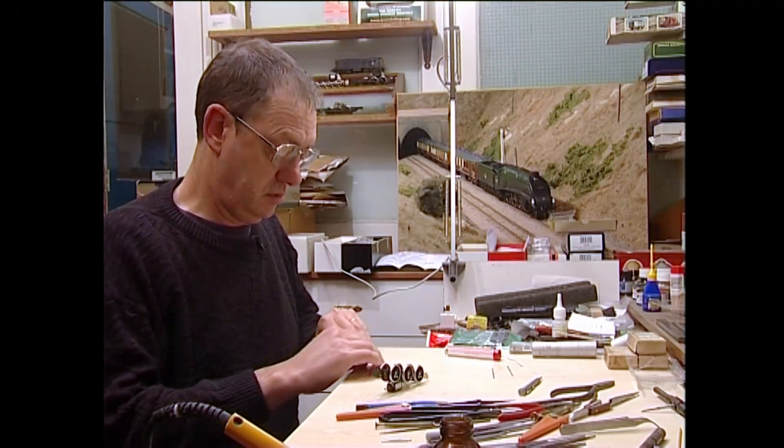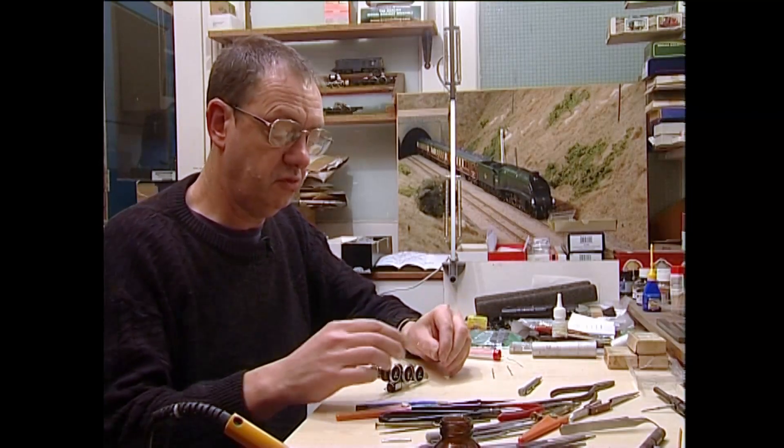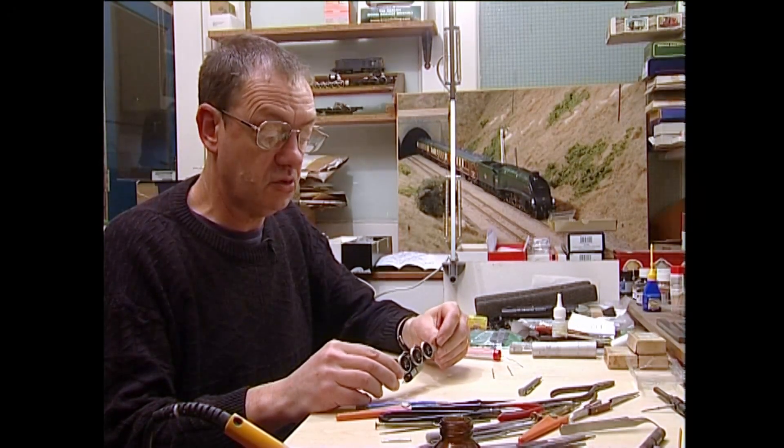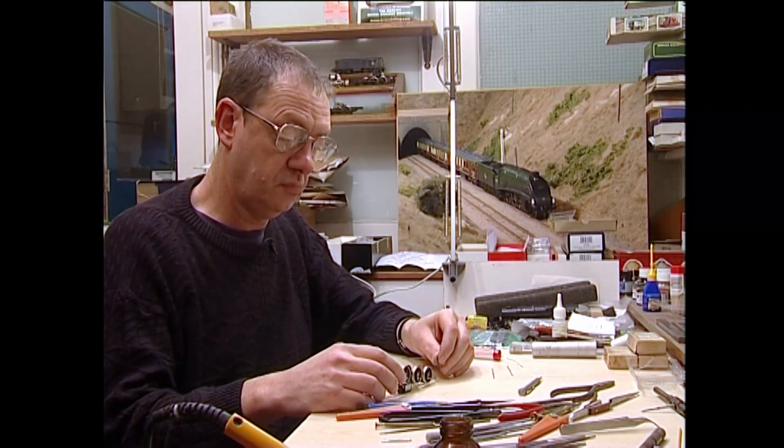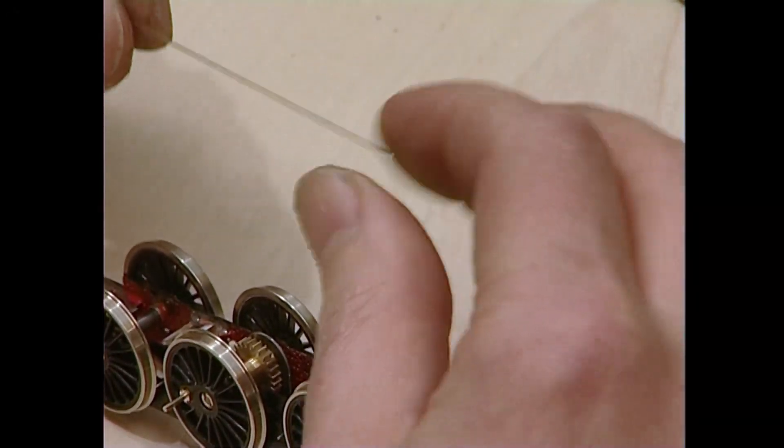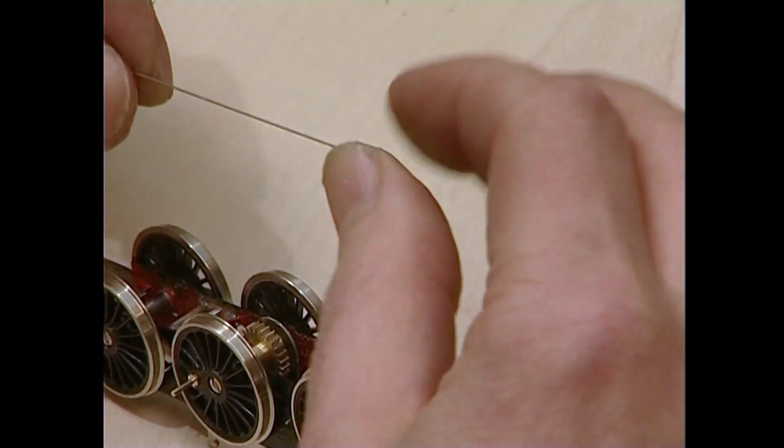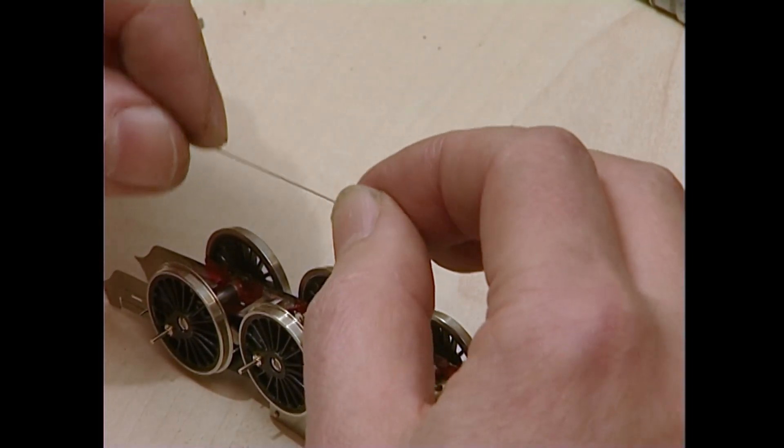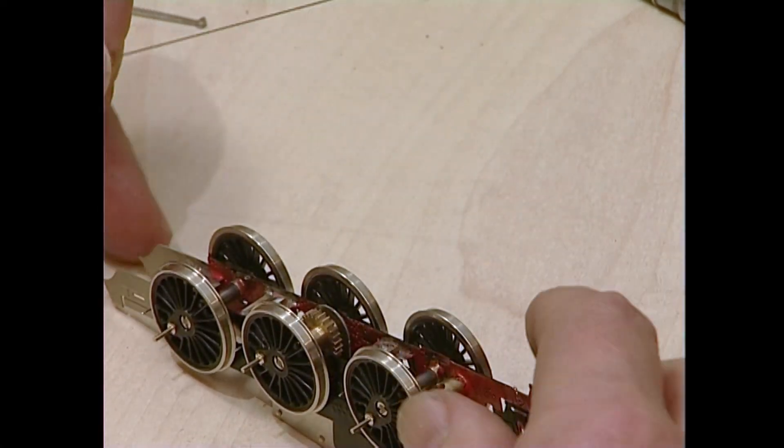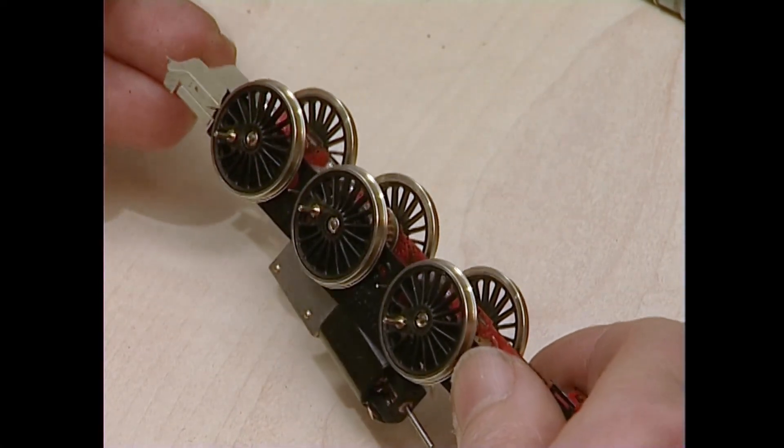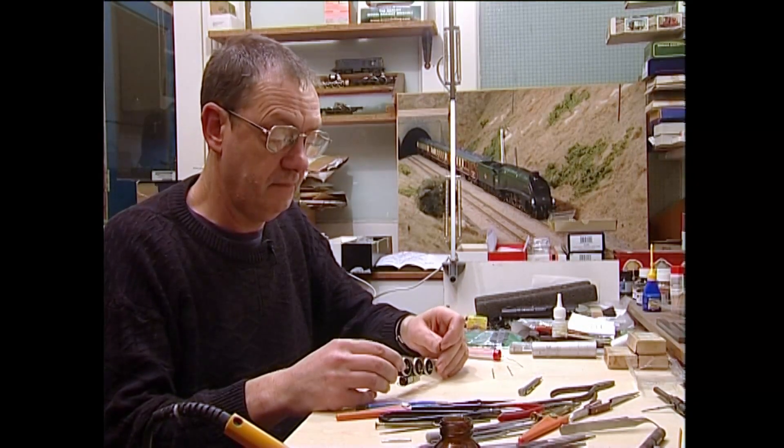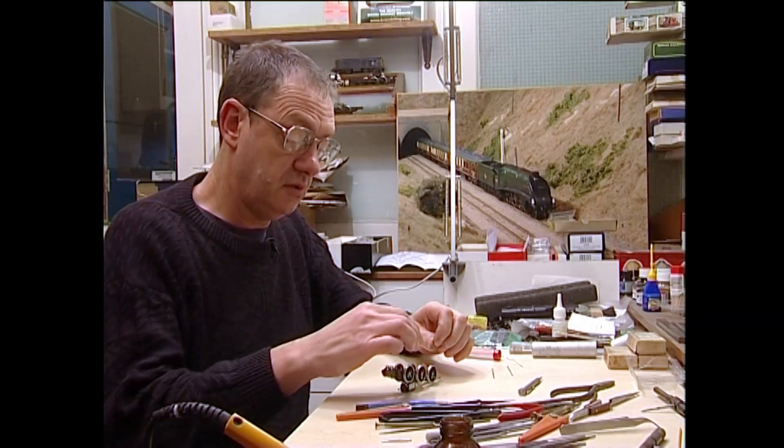For the pickups, I'm using 0.45 nickel silver wire. 26 standard wire gauge in old money. This is nice and springy. Some people use phosphor bronze. I found this to be superior. It's more springy, and yet doesn't impart too much friction on the edge of the wheels.